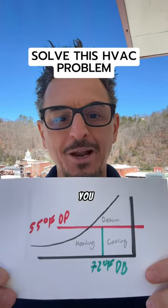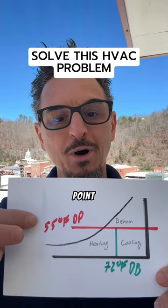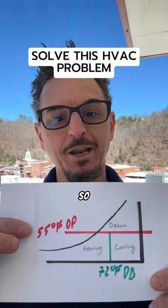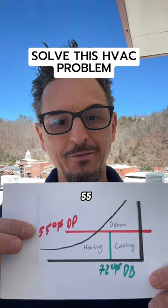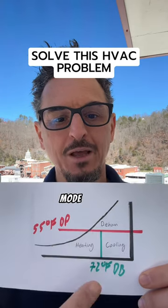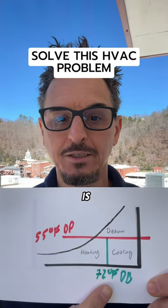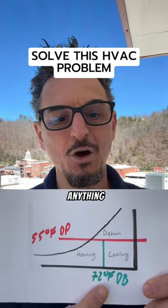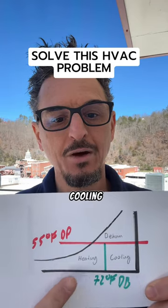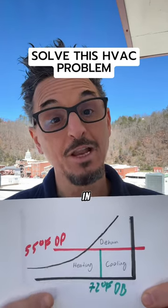Let's say you had a makeup air handling unit on this roof, and your dew point set point is 55 degrees. So anything over 55 degree dew point, you're in dehumidification mode, and your supply air set point is 72 degrees. So anything over 72, you're in cooling mode. Anything below 72, you're in heating mode.